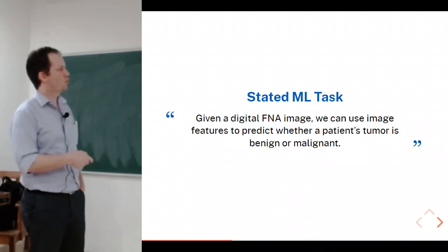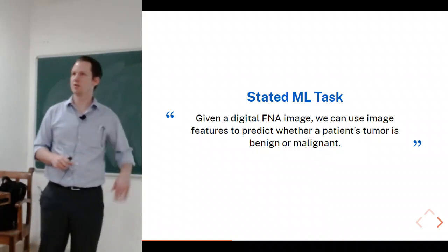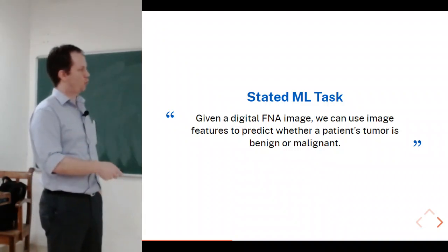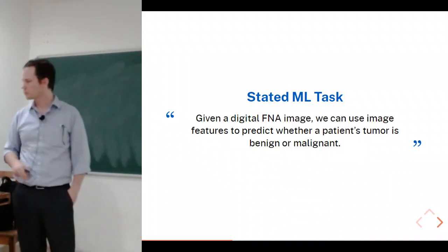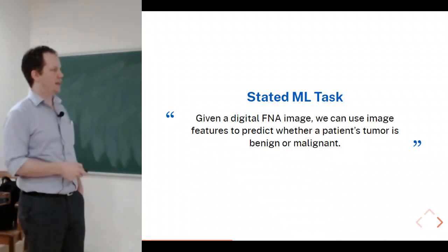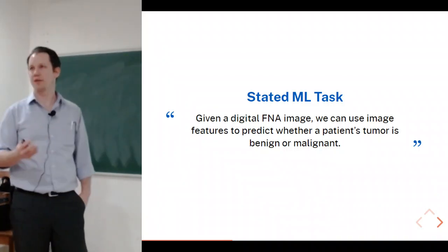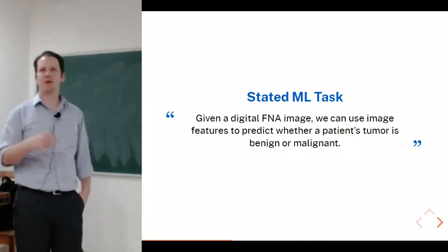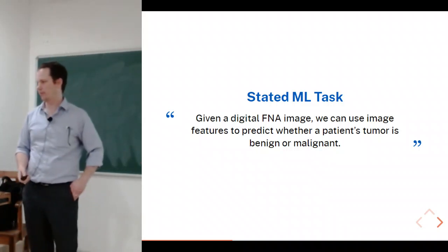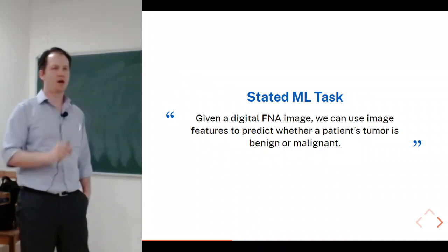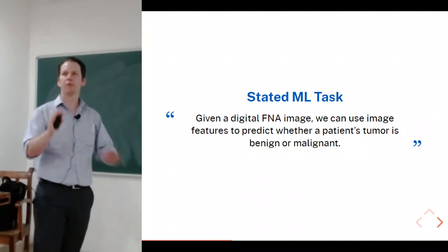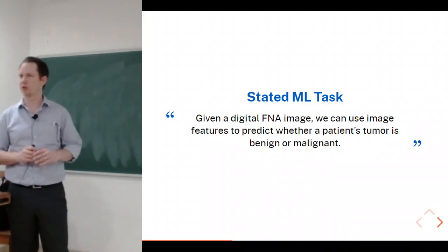In this case: given a digital FNA image, we can use image features to build a model predicting whether a patient's tumor is benign or malignant. This hypothesis statement suggests the experiment — get a bunch of images and predict based on their features. It also has a clear null hypothesis: given these images, you can't predict whether it's benign or malignant. Based on your chosen metric and approach, you can determine whether your initial assumptions were correct.